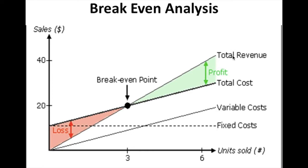Total revenue is nothing but total cost plus profit. Any businessman will aim for profits, but first he has to recover his total investment. The total cost formula is variable cost plus fixed cost. Only after recovering the total investment does a businessman aim for profits.